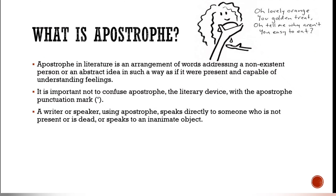What is apostrophe? Apostrophe in literature is an arrangement of words addressing a non-existent person or an abstract idea in such a way as if it were present and capable of understanding feelings. So in any literary work, when the speaker talks to a non-living or inanimate object or a dead person, this literary device is known as apostrophe, and it should not be confused with the punctuation mark apostrophe — these both are different.